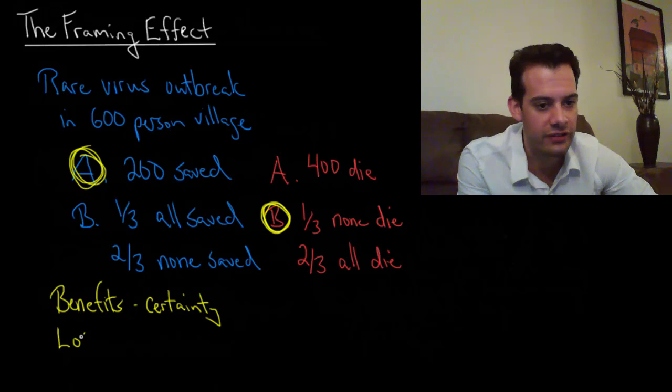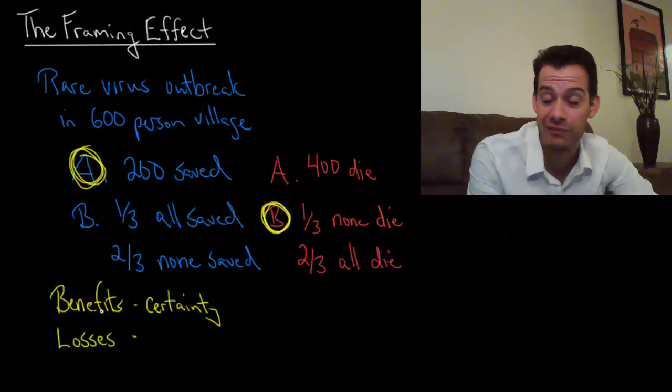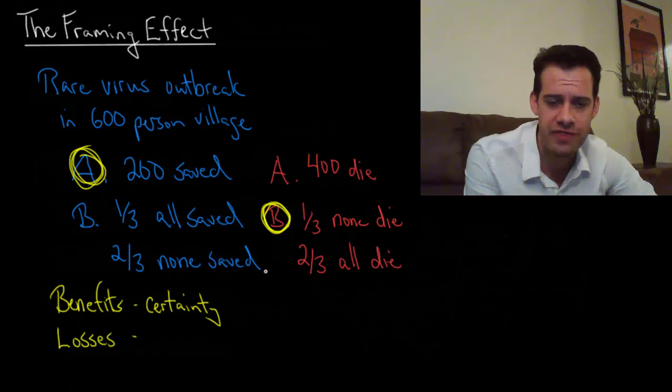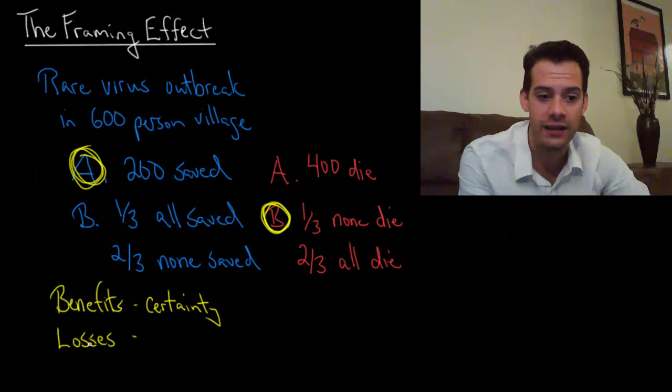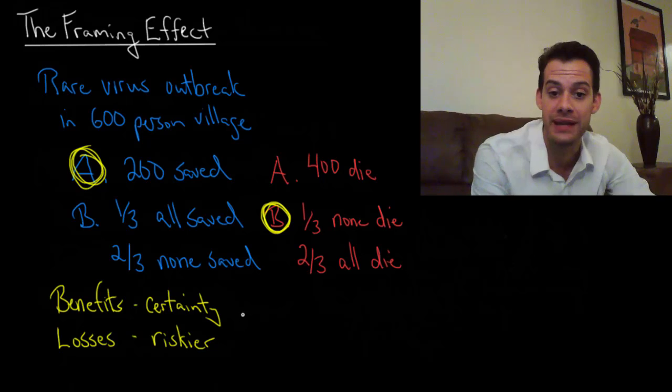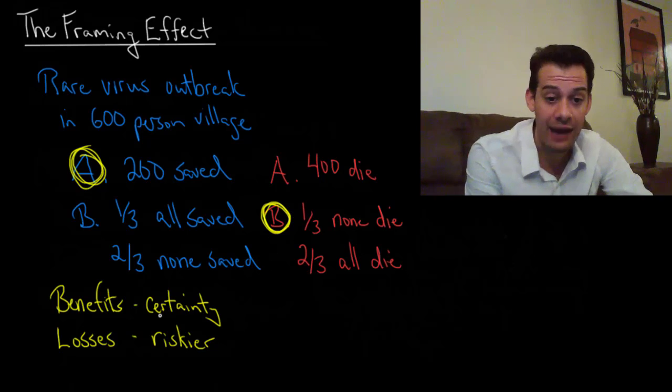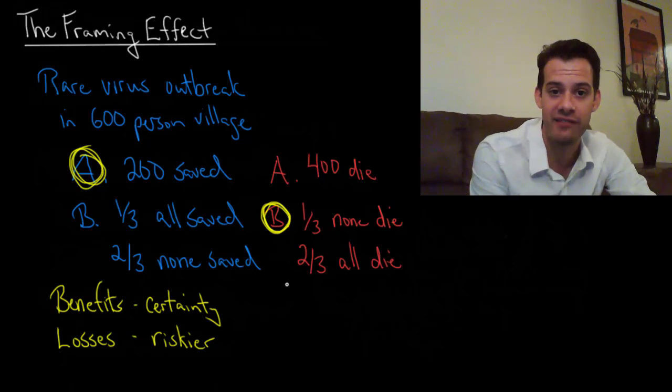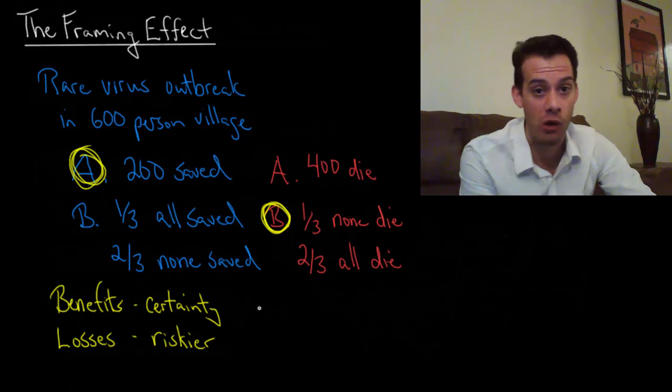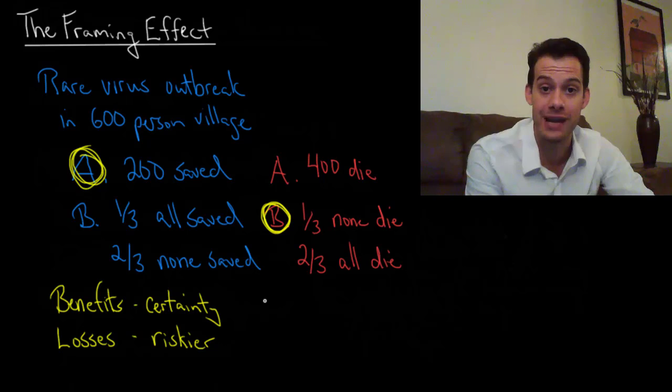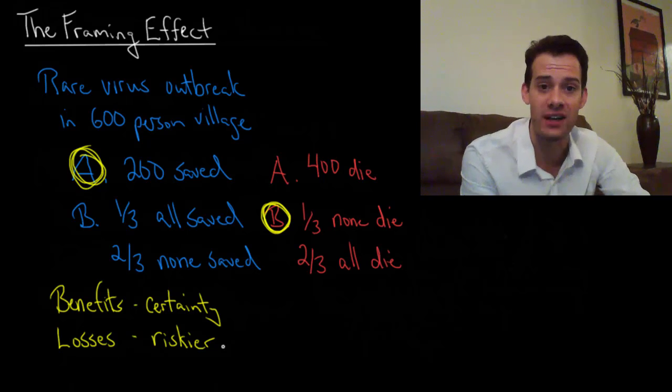But when it comes to thinking about losses people want to avoid losses and they're willing to take risks to avoid losses. So when you start thinking about the people that are going to die you're thinking about the losses and as a result you're willing to take riskier options and that's why program B is suddenly more popular because people are like, I don't like thinking about 400 people dying. I will take a chance to try to save everyone. I will risk it. I'll roll the dice and see what happens. Maybe we can save everyone. Maybe we can avoid these losses altogether.